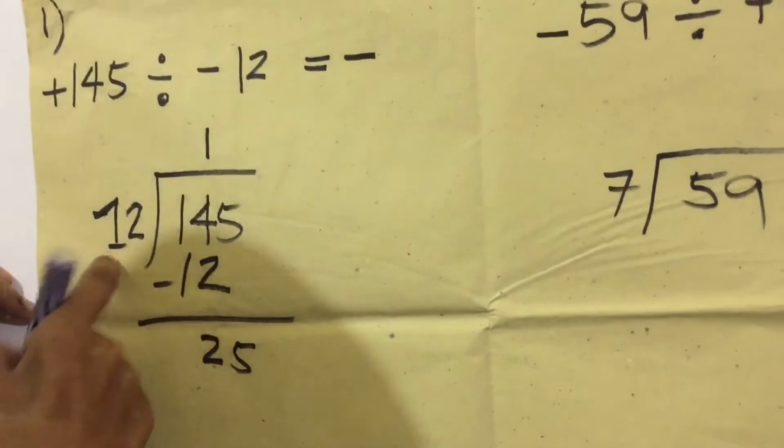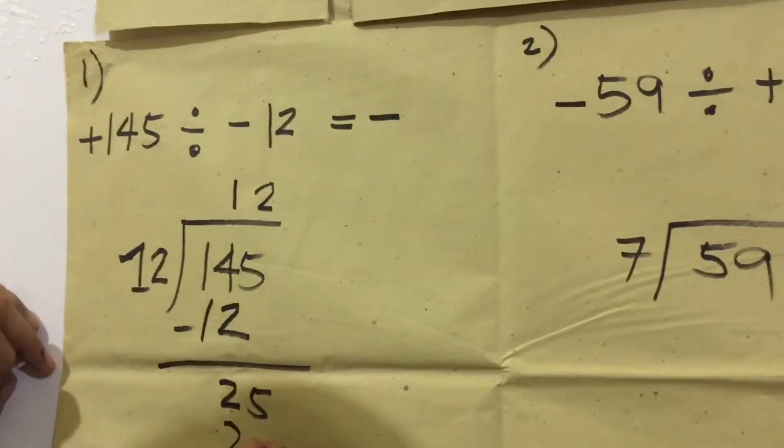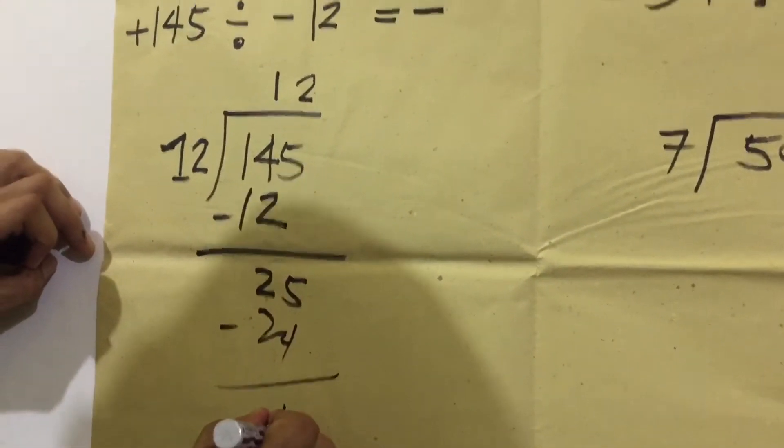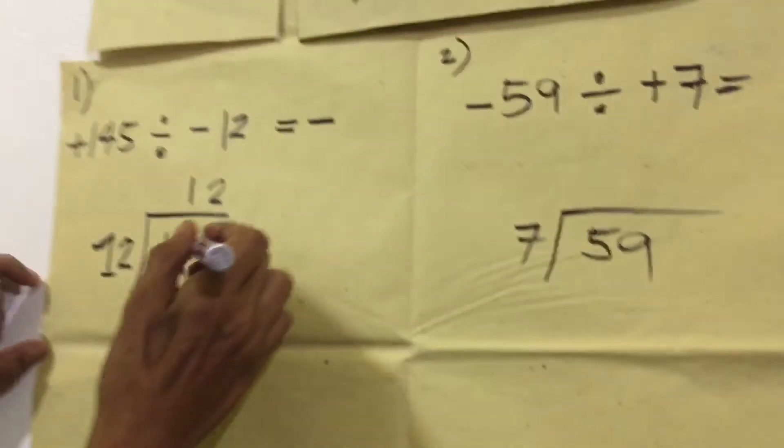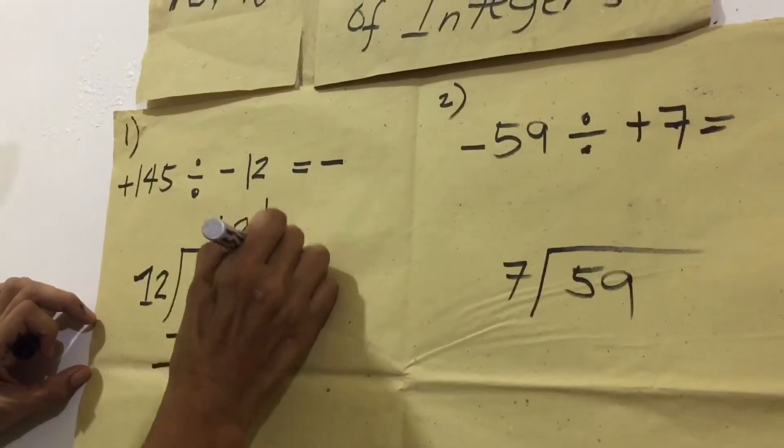Divide again. 25 divided by 12. We have 2. 2 times 10 equals 24. Minus, we have 1. Our final answer now is 12, 1 over 12.